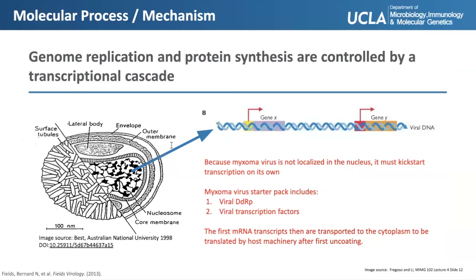As a group 1 double-stranded DNA virus, myxoma virus genome replication and protein synthesis follow a transcriptional cascade in which there are a set of early, intermediate, and late genes. Unlike other group 1 viruses, however, myxoma virus must carry its own DNA-dependent RNA polymerase (DDRP) to kickstart transcription, because it does not localize in the nucleus and therefore cannot use host DDRP. Thus, the first round of transcription occurs using viral proteins and is translated using host proteins.